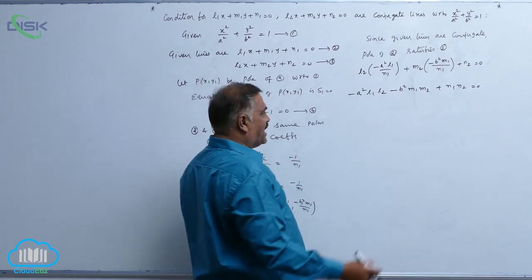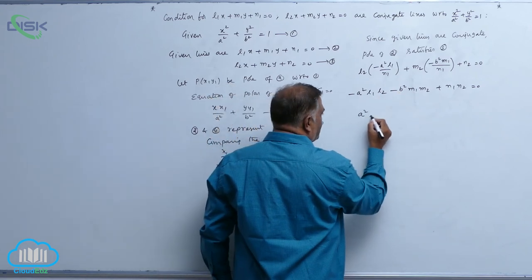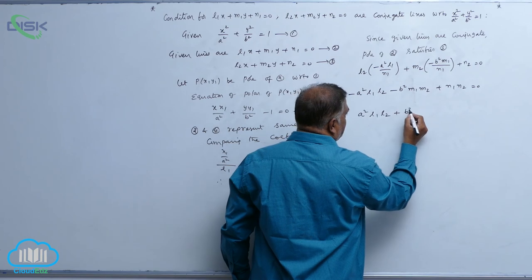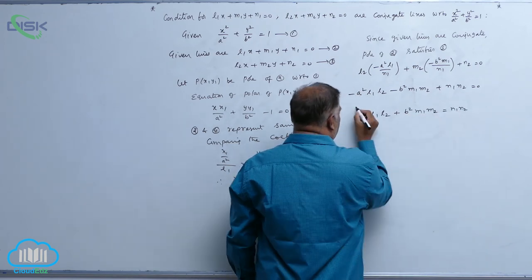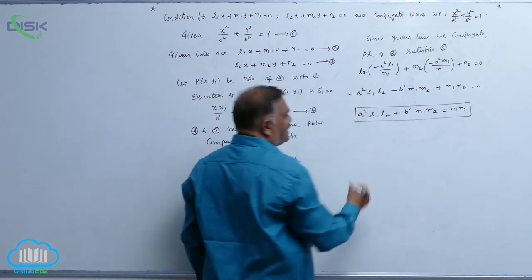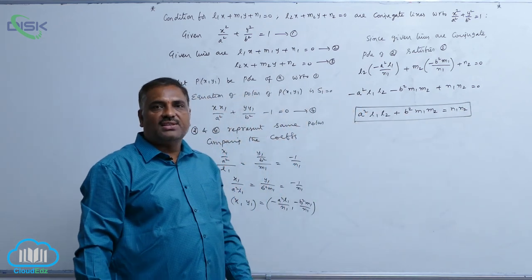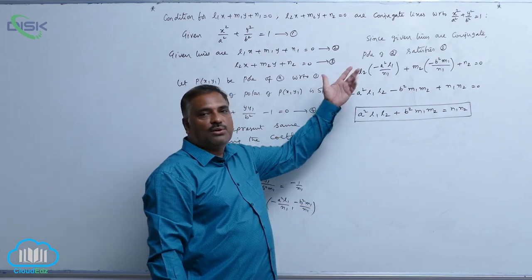Bring these two terms to the right hand side. You will get a square l1 by n2 plus b square m1 by n2 is equal to n1 by n2. This is the condition for the two lines to be conjugate with respect to the ellipse s is equal to 0.